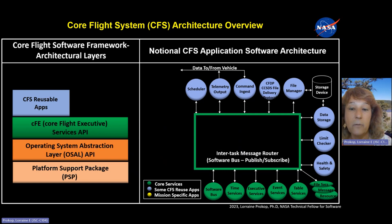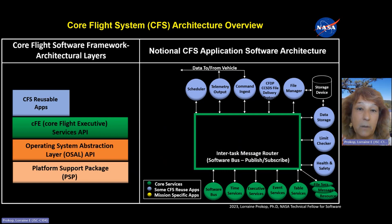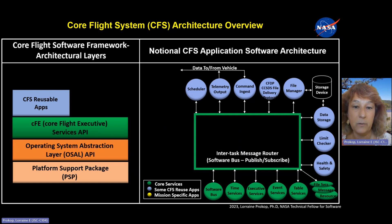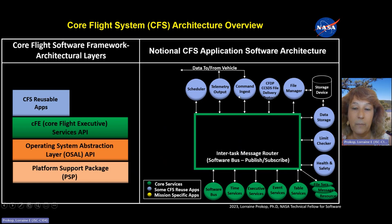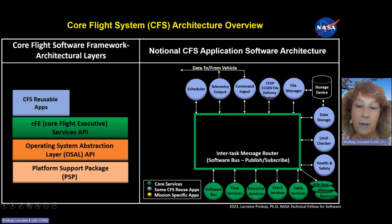Above the CFE, there are several reusable apps available within the CFS ecosystem. The Scheduler is what you use to configure the system — telling it how often you want your apps to run, configured with a table. As a user, you'd put your app into the scheduler table, the scheduler would read it, and then orchestrate your system as described. Telemetry Output provides data output outside of the system, and Command Ingest receives data from the outside. These two come with samples and are usually highly configured for the specific mission. The CFDP provides for the uplink and downlink of CCSDS files, and the File Manager manages those files on the storage device.